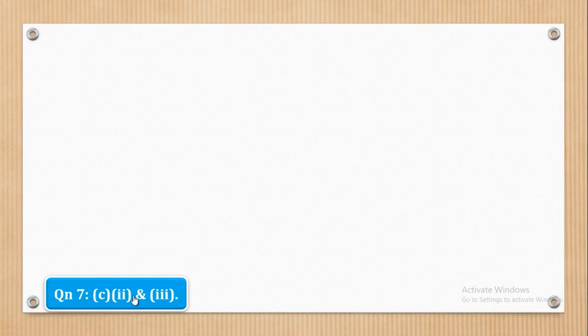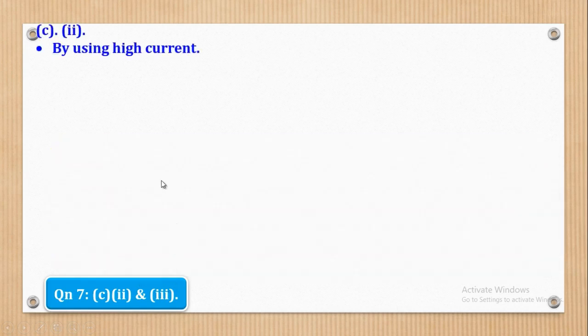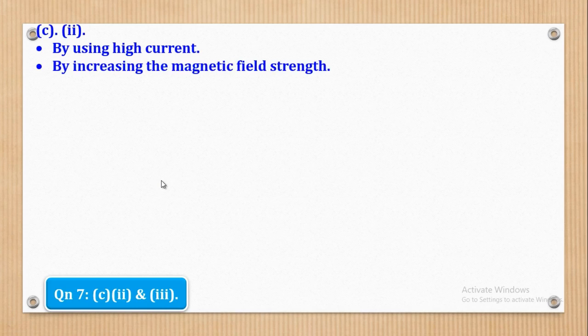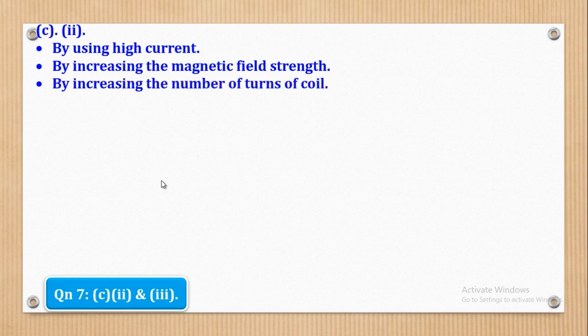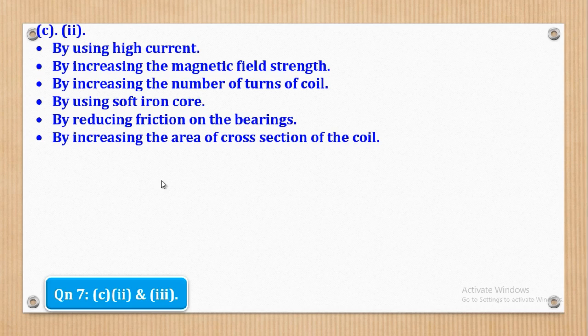So now we shall go to Roman 2, see Roman 2. See Roman 2 says that how can power of a motor be increased? So one other way is by using high current. Another way is by increasing the magnetic field strength. Another way is by increasing the number of turns of coil. Another way is by using soft iron core. Another way is by reducing friction on the bearings. Another way is by increasing the area of cross section of the coil. So basically, that's what they wanted in Roman 2.